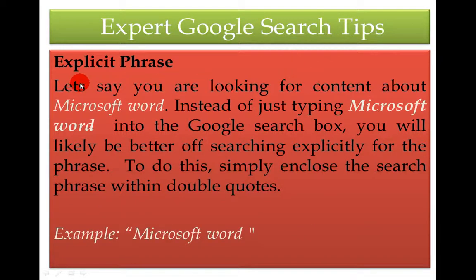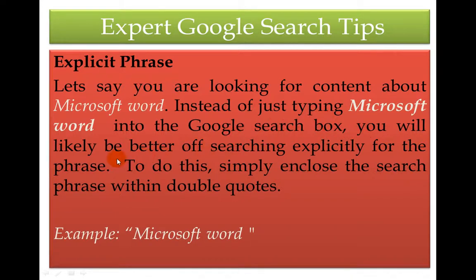The first option we are going to see is the explicit phrase search. Let us say you are looking for content about Microsoft Word — instead of just typing Microsoft Word into the Google search box, you are likely better off searching explicitly for the phrase. To do this, simply enclose the search phrase within double quotes.